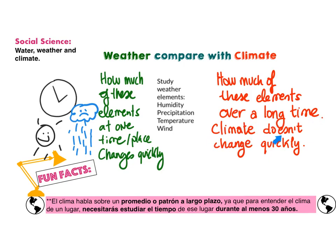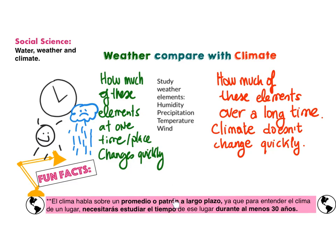So climate doesn't change so quickly. Do you know these fun facts? El clima habla sobre un patrón a largo plazo. So, para entender el clima, necesitarás estudiar el tiempo de ese lugar durante al menos 30 años. So we have to study at least 30 years — a long time — to know a place's climate.